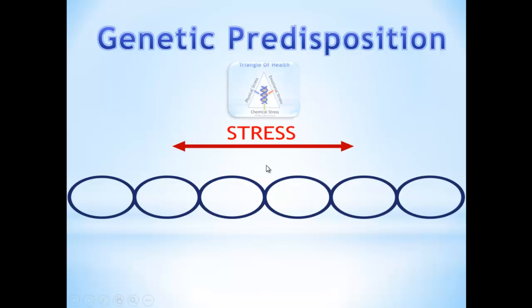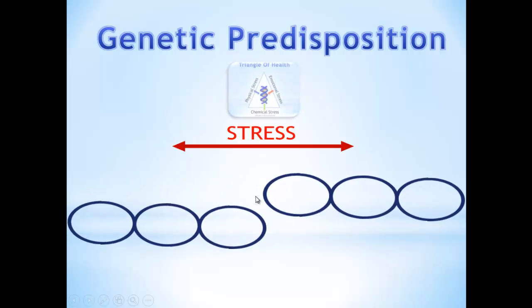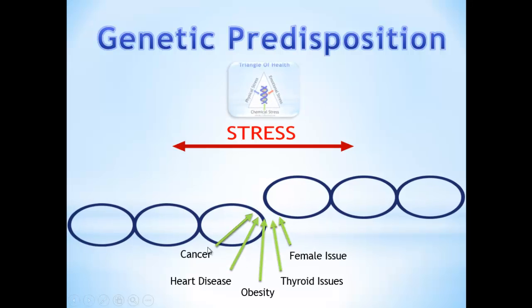And that's going to basically predispose if you have that BRCA gene, that link may be your BRCA gene and that may predispose that link to break. And then for that person it may be cancer. For someone else it may be heart disease or obesity or a thyroid issue or a female hormone issue or another autoimmune condition or Alzheimer's or dementia.